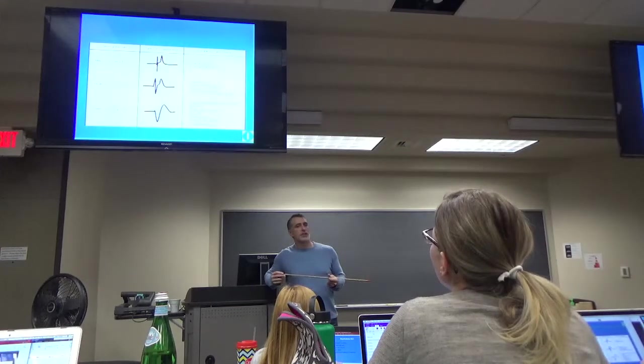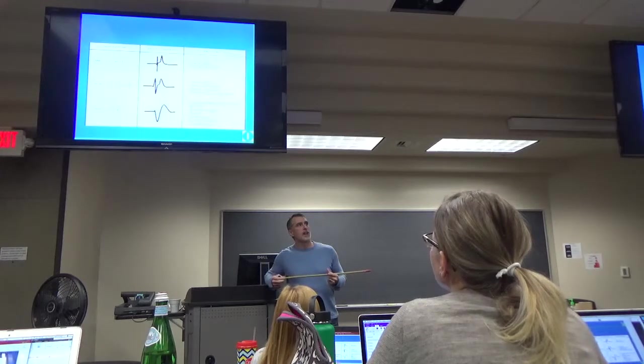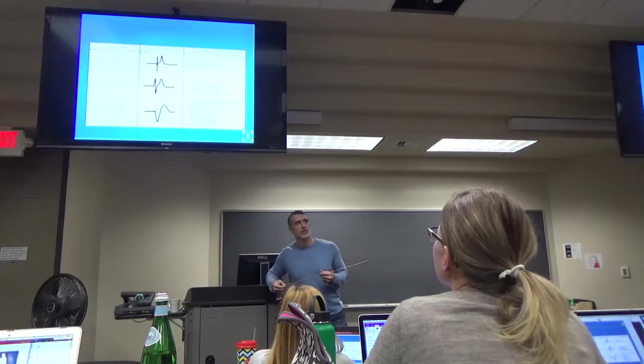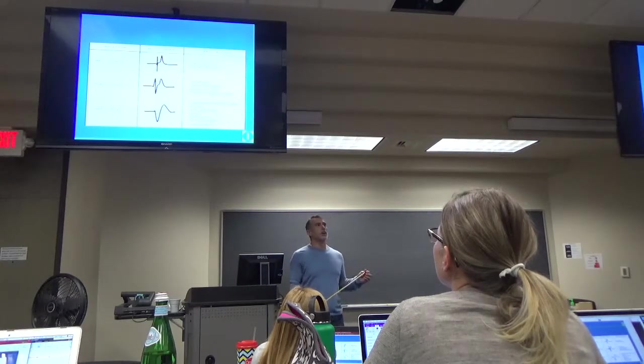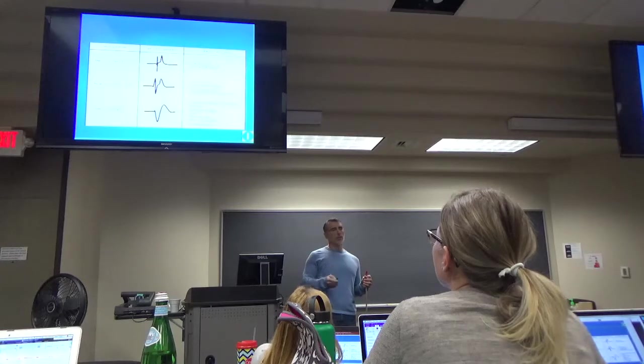So I'll show you in a minute the way I remember this. Here's where you can start to see these changes. So, you know, 5.5, 6.5, you might start seeing some peaking of your T waves. 6.5 to 8, you start losing your P waves, and you start to get some prolongation. And then over 8, it's starting to get pretty severe.